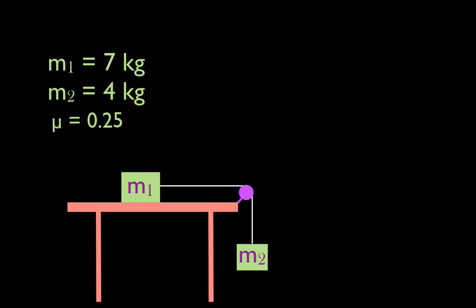This is the situation we have. We have mass M1, which is 7 kilograms, sitting on the table. There is a coefficient of friction of 0.25 between M1 and the table. Then we have mass M2, which has a mass of 4 kilograms. The two masses are attached to each other by a massless inelastic string that passes over a massless frictionless pulley, meaning we don't have to consider the string mass, friction, or energy loss in the pulley when calculating acceleration.